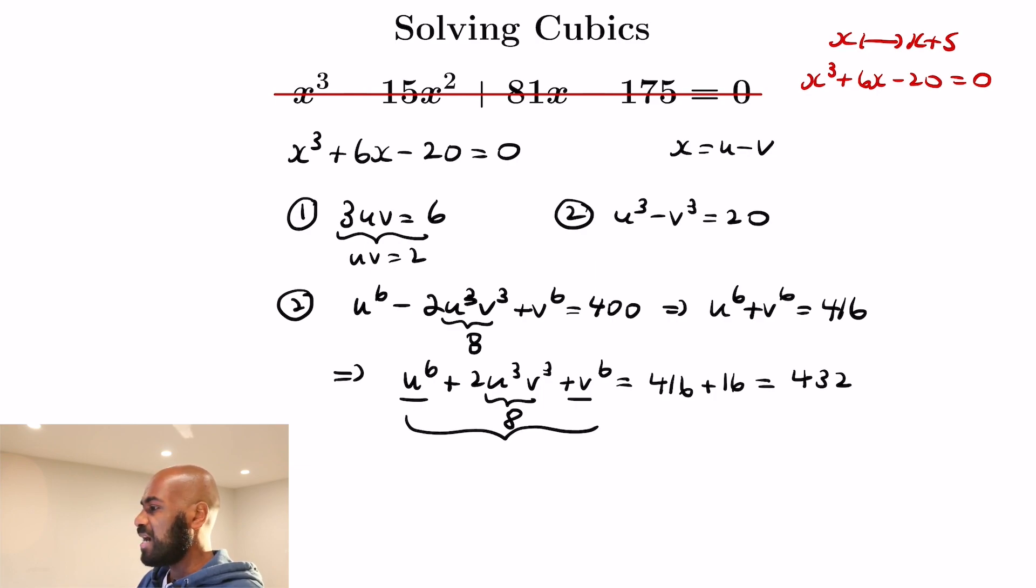So this entire left side, which is u cubed plus v cubed all squared, is going to equal the 432, which tells us that u cubed plus v cubed is the square root of that, which is plus or minus square root 432, or equivalently plus or minus 12 times the square root of 3, since 432 is 144 times 3.